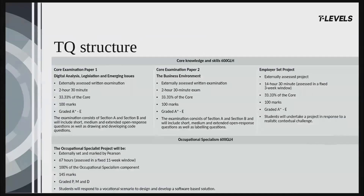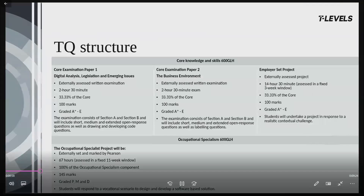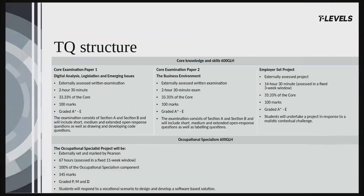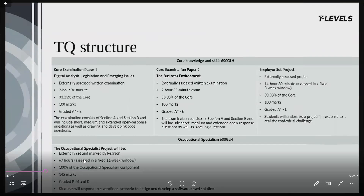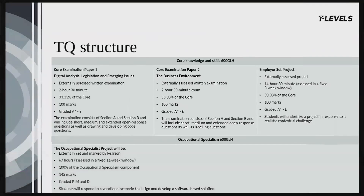This slide contains an overview of the Technical Qualification, or the TQ for short. The TQ is split into two components: the core and the Occupational Specialism. The core is 600 guided learning hours and has three assessments. There is a Getting to Know the Specification specifically for the core component, available to watch on demand via our website. There is one Occupational Specialism — Digital Production, Design and Development — which is 600 guided learning hours and is assessed through the Occupational Specialism project.